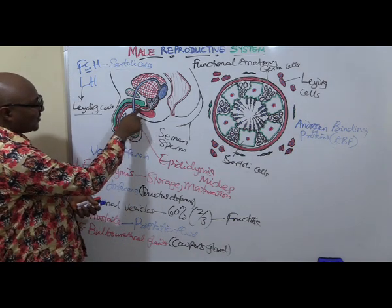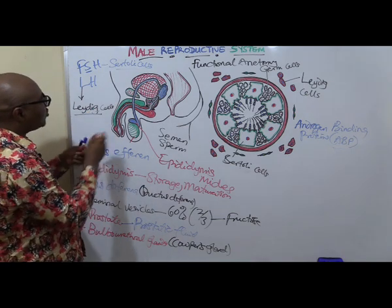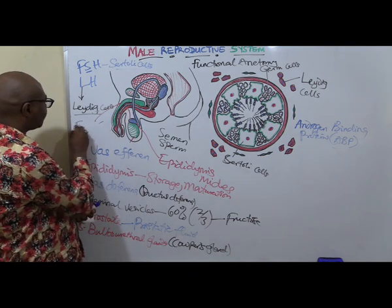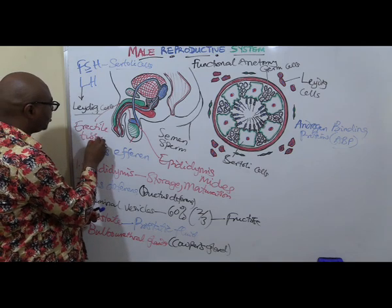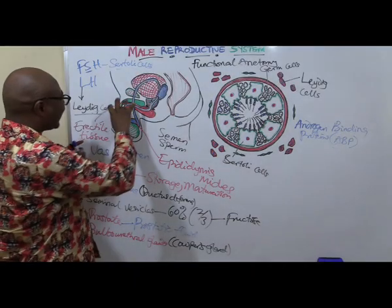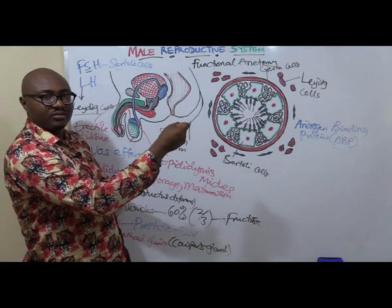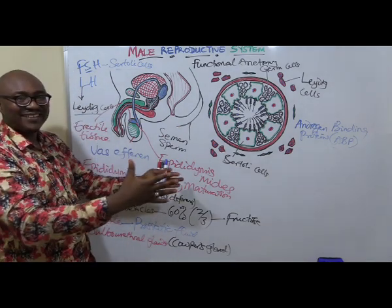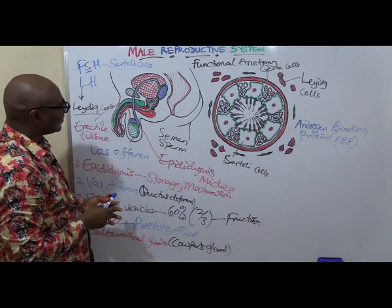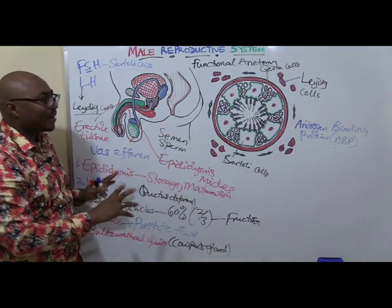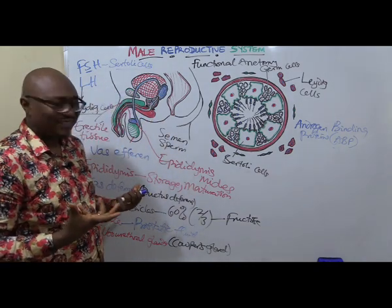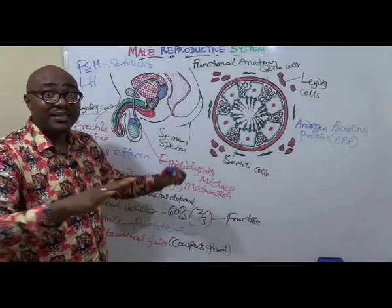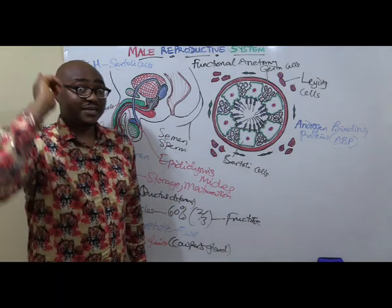The semen travels to the urethra and exits from the penis. Surrounding the penis is erectile tissue, which enables erection during arousal. We're going to deal with the male sexual act and the stages leading to ejaculation in the next video. This is what you need to know about the functional anatomy of the male reproductive system.